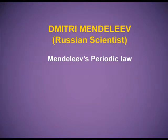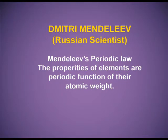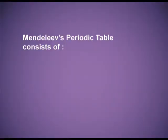The law states that the properties of the elements are the periodic function of their atomic weights. He gave importance to atomic weights. Mendeleev arranged elements horizontally in the order of their increasing atomic weight. He gave preference to the chemical properties and ignored atomic weight if some elements did not fit as per atomic weight.